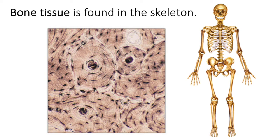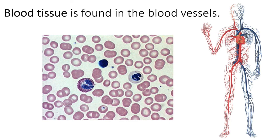Lastly, blood is also connective tissue. It is found in your blood vessels and is composed of cells — erythrocytes, leukocytes, and platelets. The non-cellular extracellular matrix of blood is called plasma. Plasma is non-cellular and mostly water, but it also contains nutrients, waste, electrolytes, hormones, proteins, and other signaling molecules.